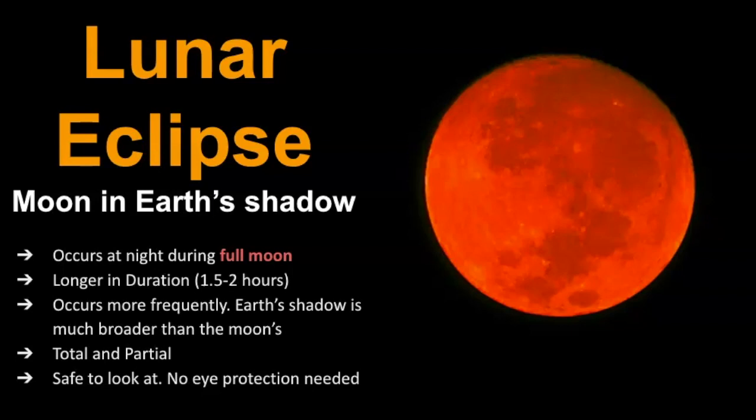It's longer in duration than a solar eclipse, and it occurs more frequently. This is because Earth's shadow is much broader than the moon's shadow. There are two different types: you can have a total lunar eclipse or a partial lunar eclipse, and what's great about these is that they're safe to look at. You don't need any eye protection when you're looking at a lunar eclipse.